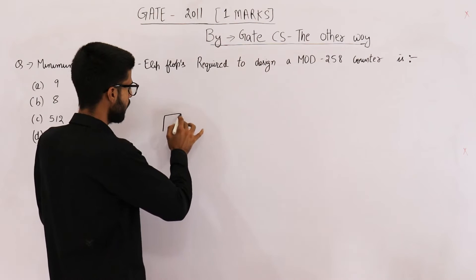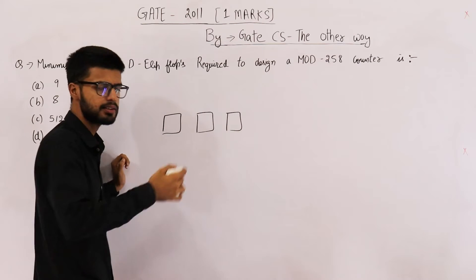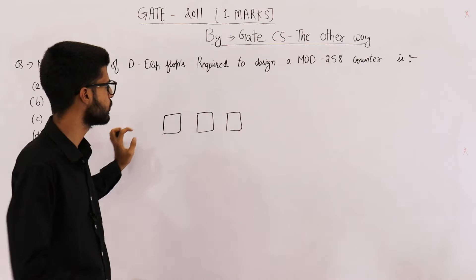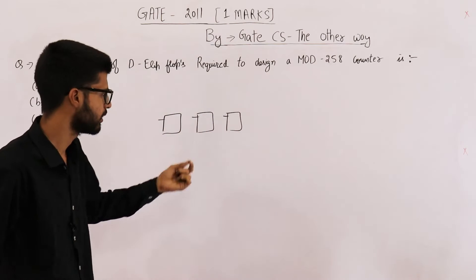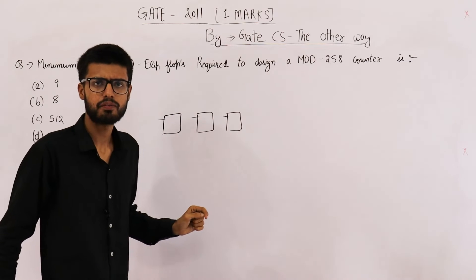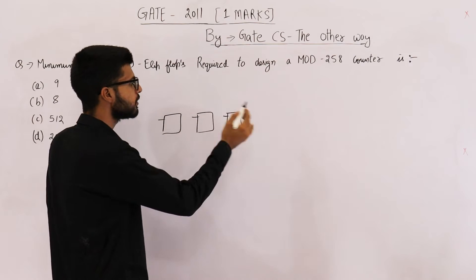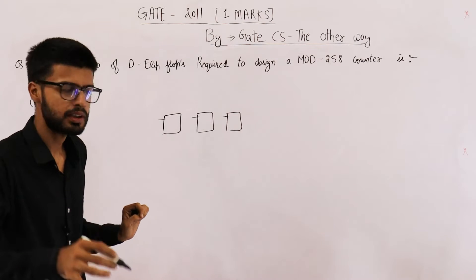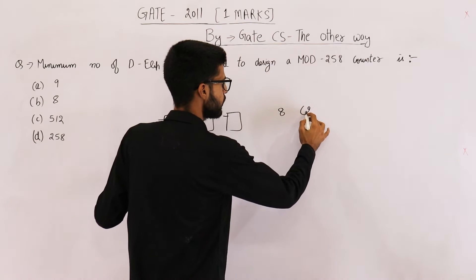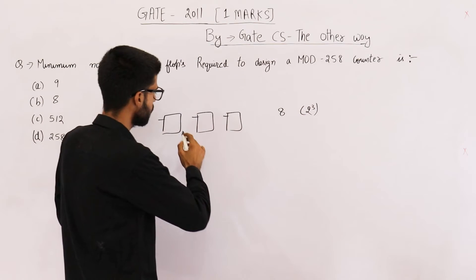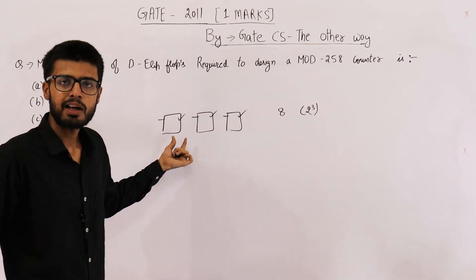If you have three flip-flops with some combinational circuit at the inputs, in the best case these flip-flops can produce eight different states. That is 2 raised to the power 3, because you will have three bits at outputs. The state is defined by a three-bit number, and three bits can produce a maximum of eight bits.